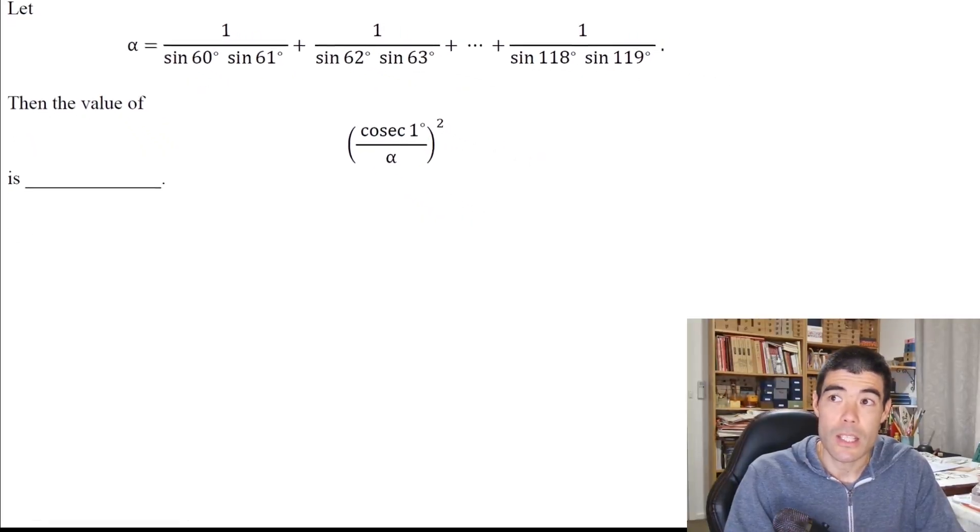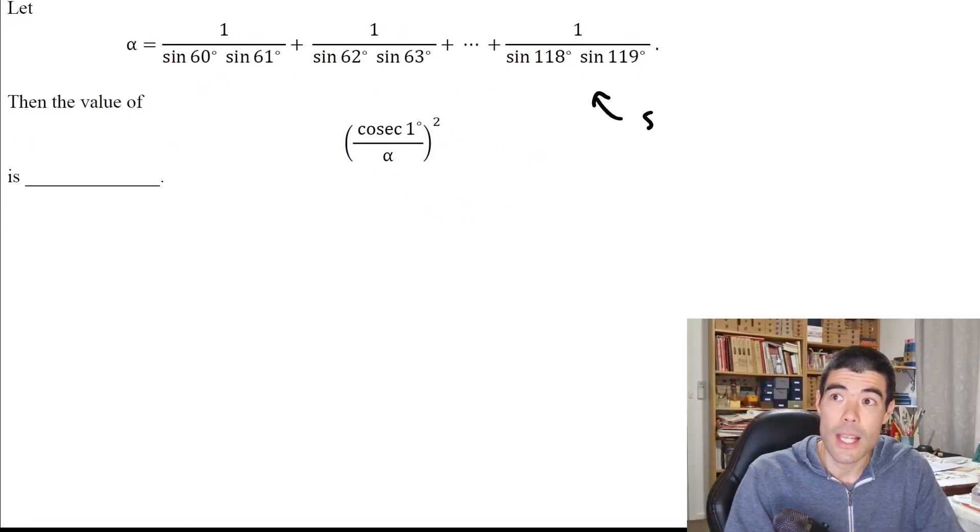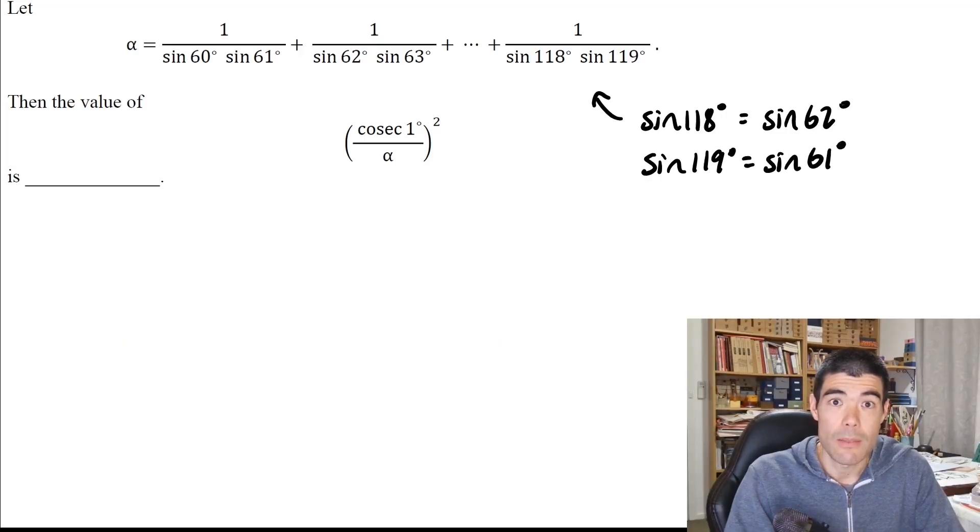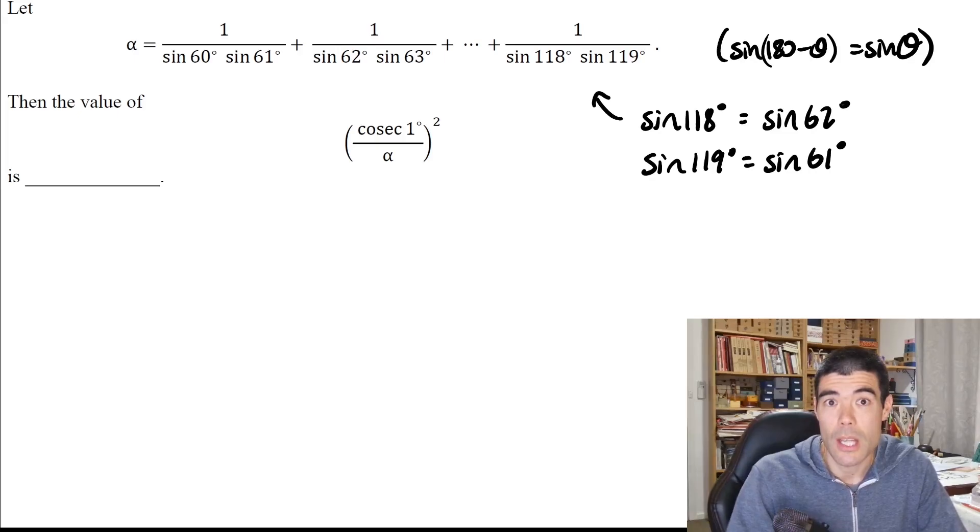The first thing we can do is recognize that sine of 118 is the same as sine of 62, and sine of 119 is the same as sine of 61, because sine of 180 minus theta equals sine of theta.